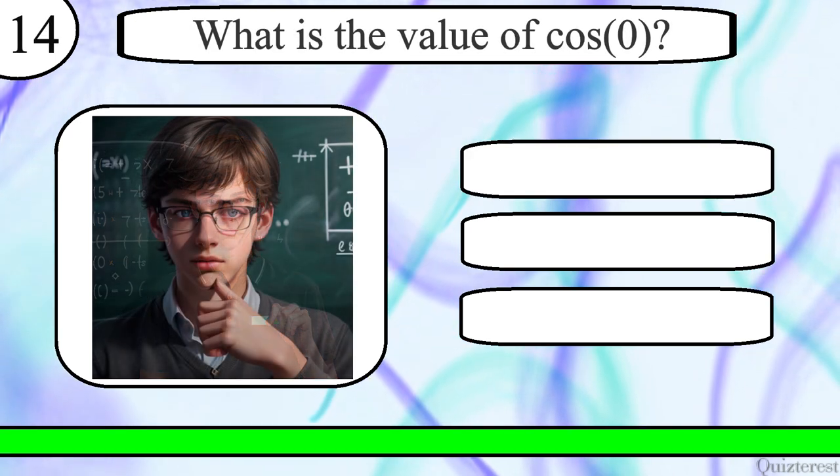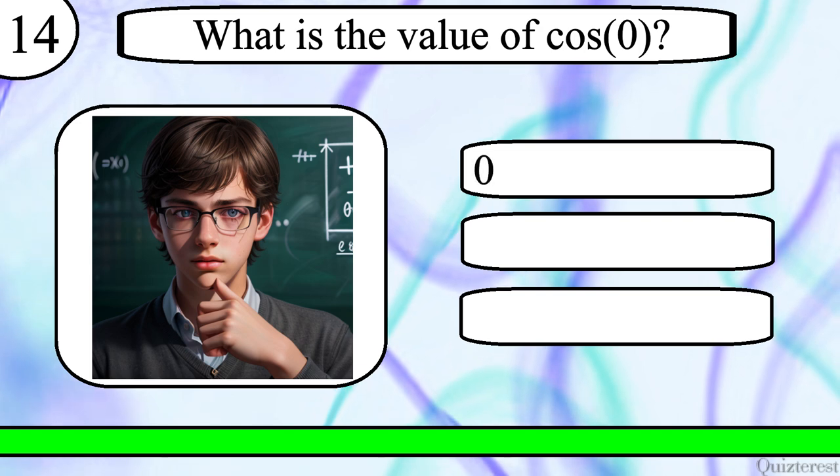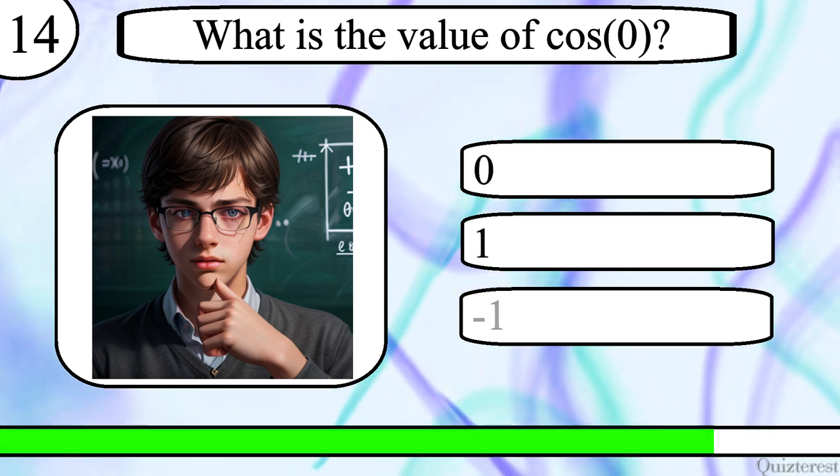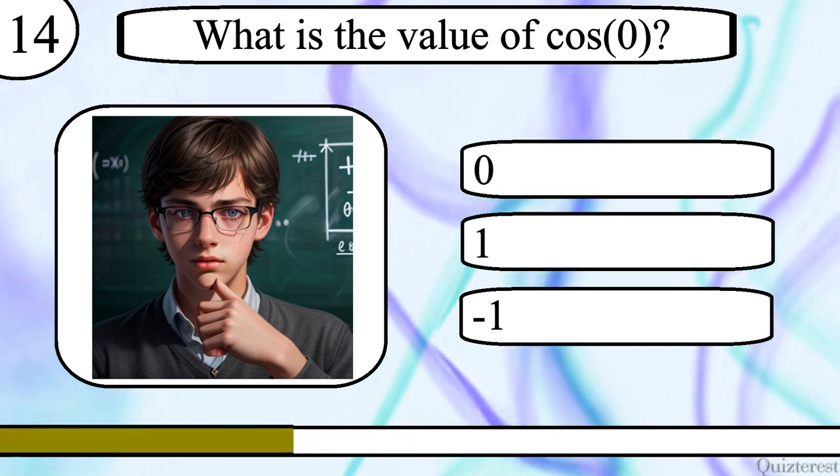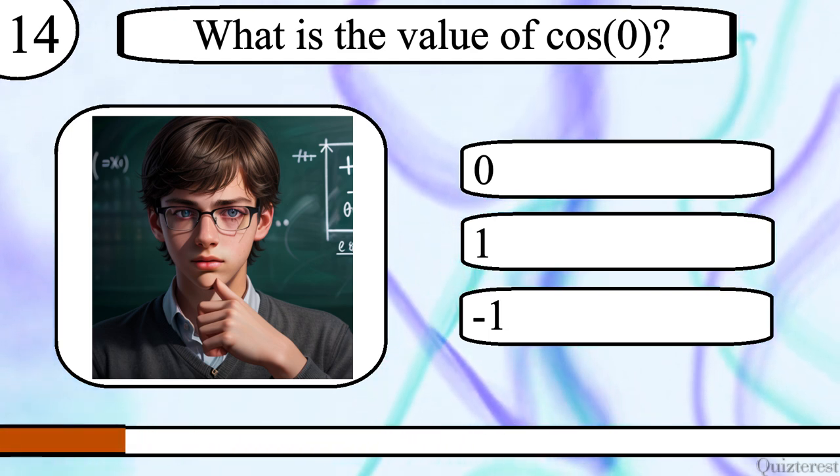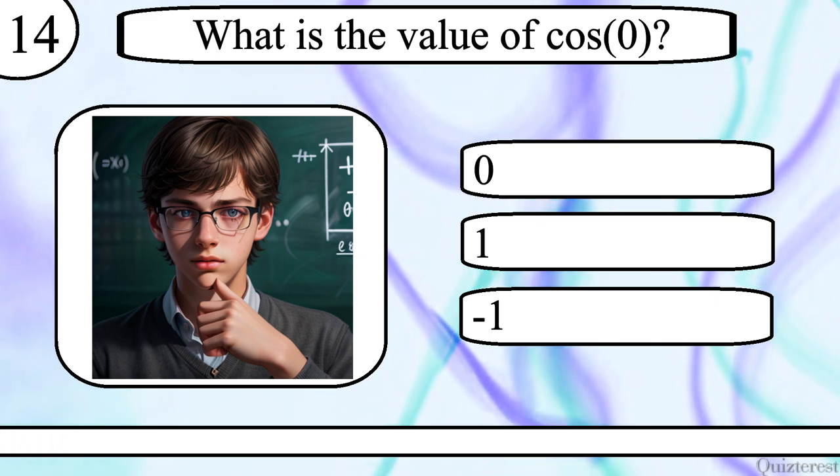Question 14. What is the value of cosine of 0? 0, 1, or negative 1? The correct answer is 1.